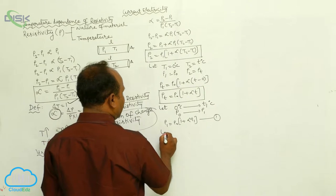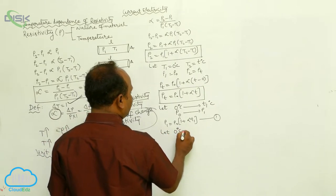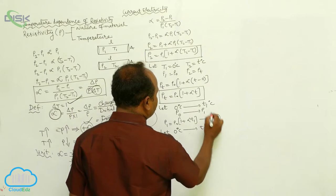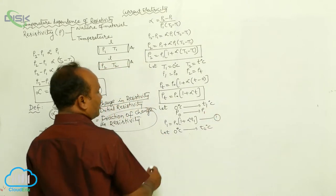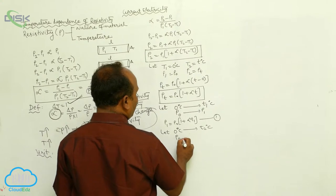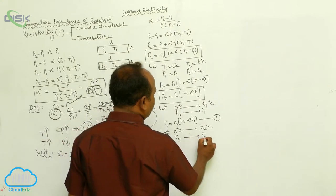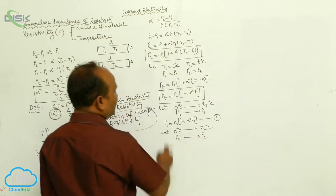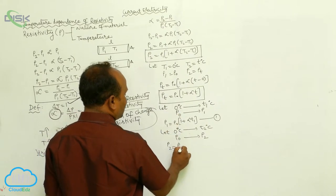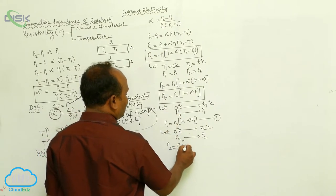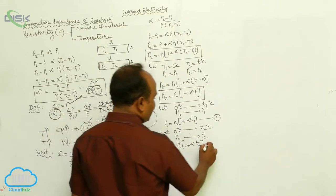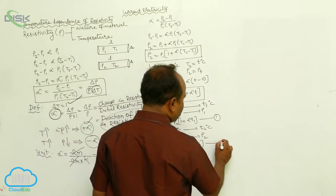Again, let temperature be increased from 0°C to T₂ degrees centigrade. Then resistivity is increased from ρ₀ to ρ₂. Therefore, ρ₂ = ρ₀ × (1 + αT₂). This is called the second equation.